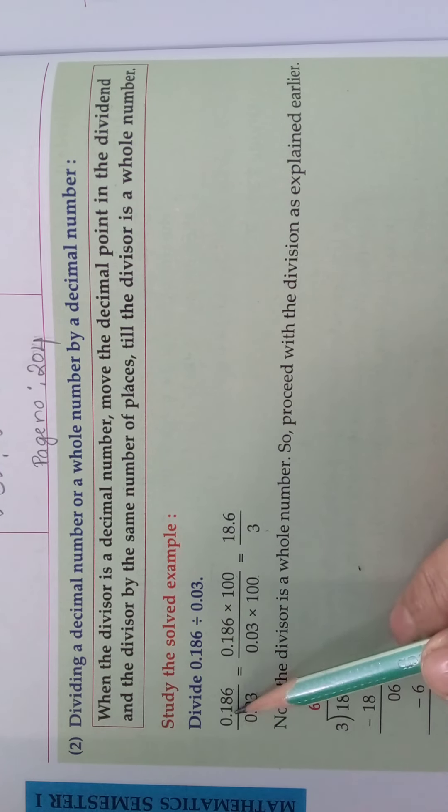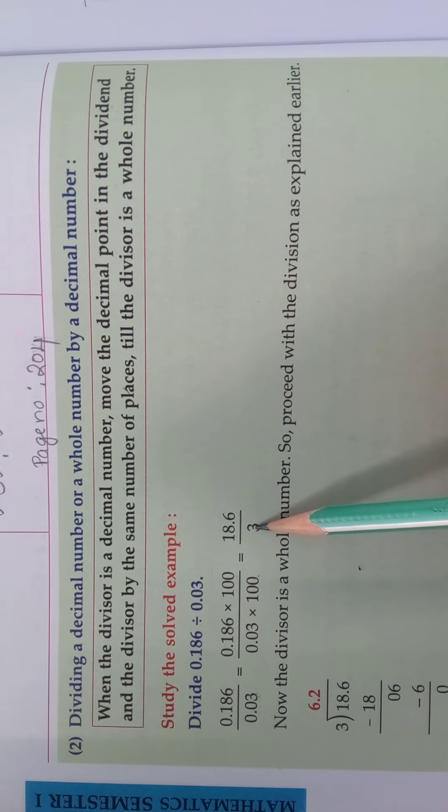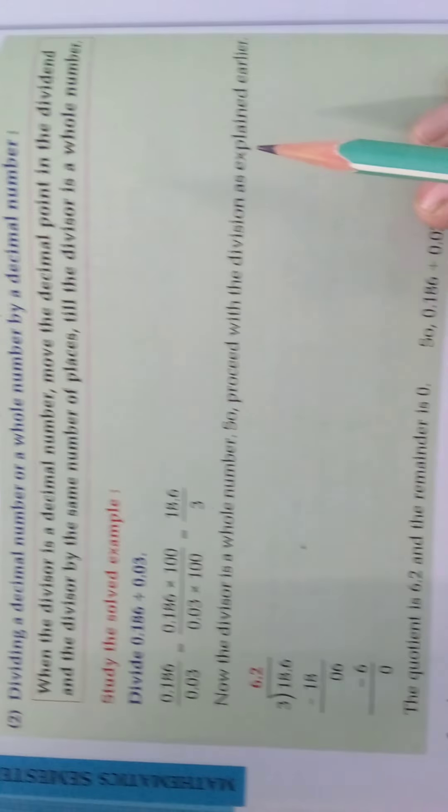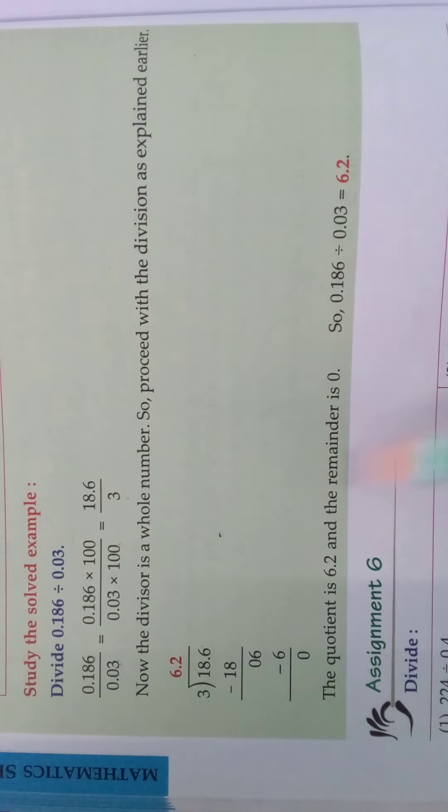Look here, 0.186 by 0.03. So this has two digits after the decimal part. So multiply it by 100, 100. So what you will get? 18.6 divided by 3. Now you divide, that means 18.6 by 3. You will get the quotient.